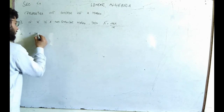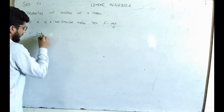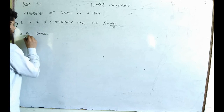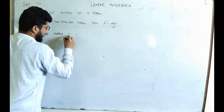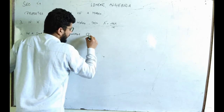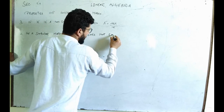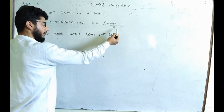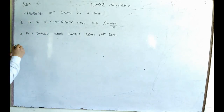Property number three and four: a singular matrix — that is, one where the determinant is zero — does not possess an inverse. You can see from this that if the determinant of A is zero, it is singular, and the inverse does not exist.